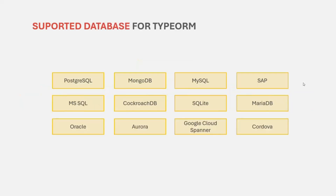As far as compatible databases are concerned, you can use any database as your database solution with NestJS. On this screen you can see a few examples of databases you can use with NestJS, but the list is not limited to these. These databases are compatible with TypeORM, and for MongoDB you can use Mongoose. NestJS does not have any layer of compatibility with databases directly — NestJS relies on TypeORM to get compatibility with the database. So since these databases are compatible with TypeORM, they are also compatible with NestJS.